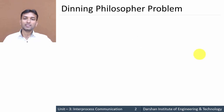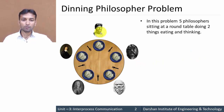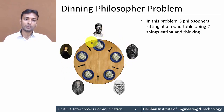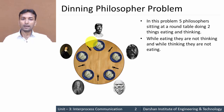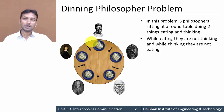First of all, what is the Dining Philosopher Problem? In this problem there are five philosophers sitting around a table and they are doing two things: either eating or thinking. While they are eating they are not thinking, and while they are thinking they are not eating. At a particular time, philosophers are either eating or thinking.